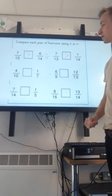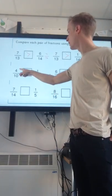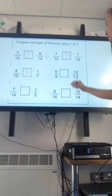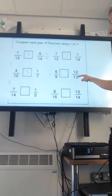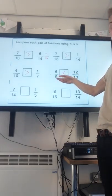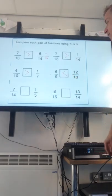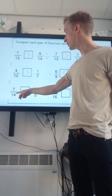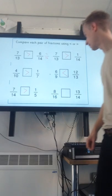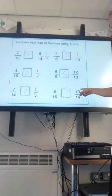Over here, we've got 1 fourteenth. A fourteenth is smaller than a thirteenth. Remember, if we had the whole, cut it into 14 pieces, they'd be smaller than the thirteenths. We've got 7 of those and 1 of those. So that's going to go that way around. 4 tenths is definitely going to be bigger than 1 seventh. And then over here, look, 12 out of 13, that's nearly the whole thing. 6 ninths, equivalent to 2 thirds, is further from the whole.